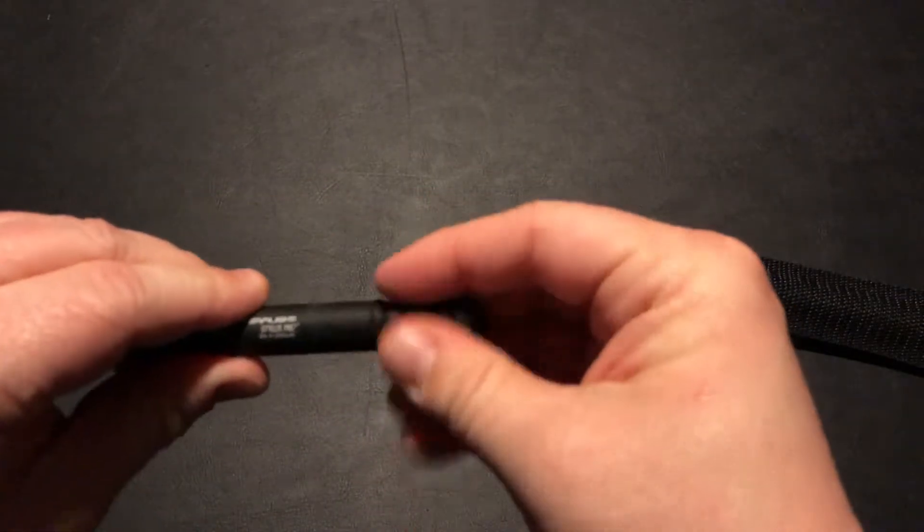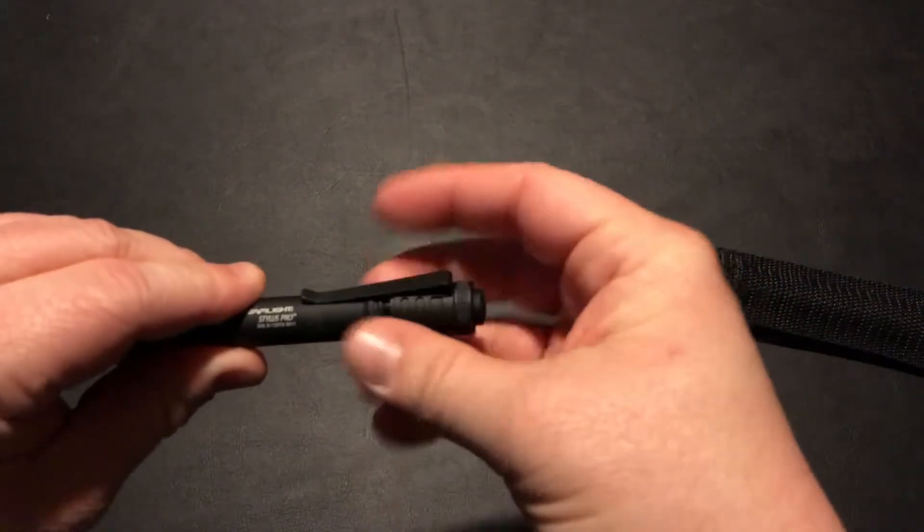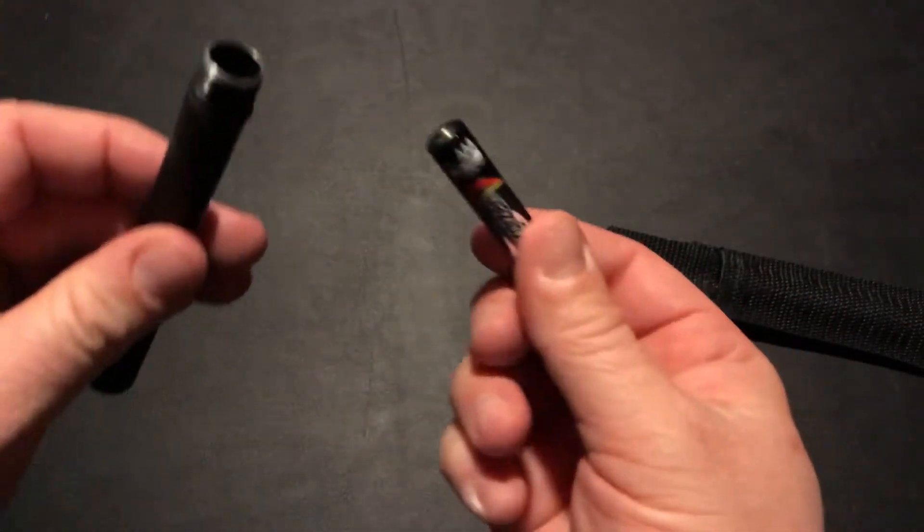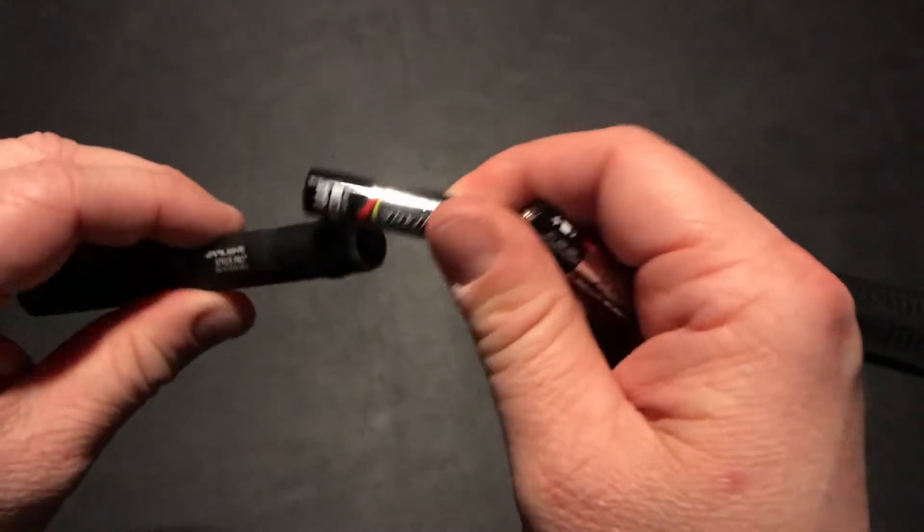A couple things to double check as you're getting your flashlight set up. The batteries won't come installed. You're going to want to put the positive side down.